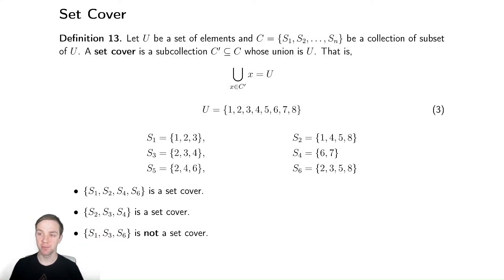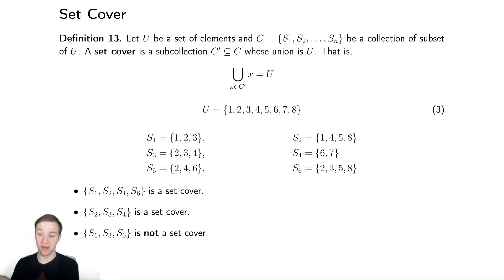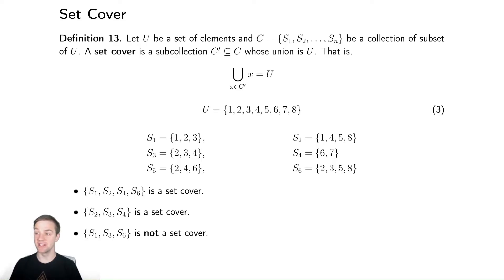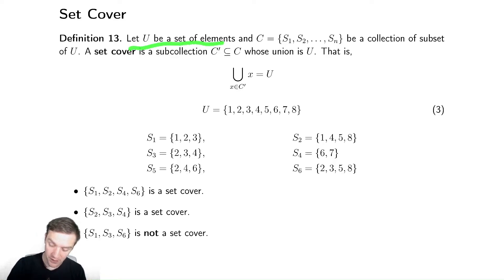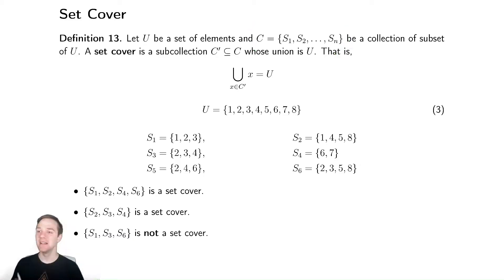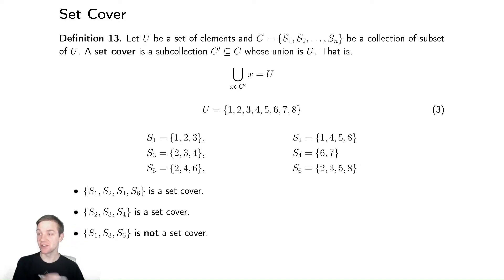For our last NP-complete problem, let's look at one problem that doesn't have to do with graph theory or satisfiability. This is a very set-theoretic problem called set-cover. We're going to be given a set and a collection of subsets. A set-cover is a sub-collection of those subsets such that their union is the original set.